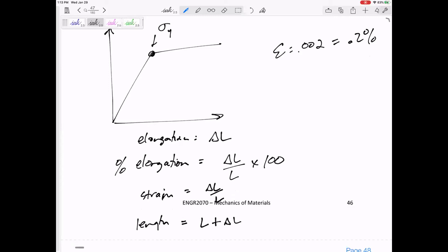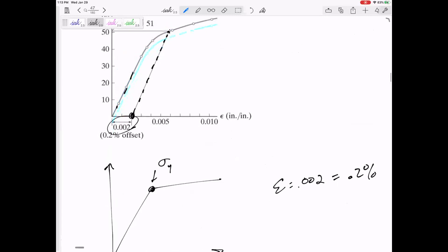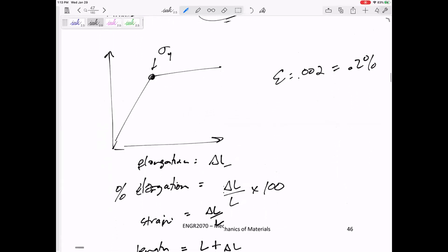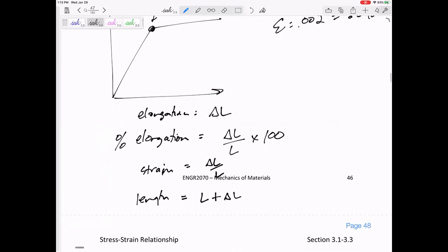If it asks for the strain, just give me whatever was on that axis. But if it asks for actual lengths or elongation, I'm only asking for delta L.